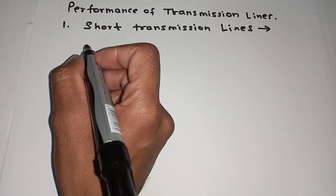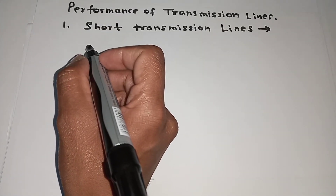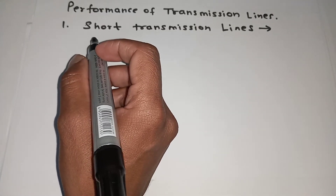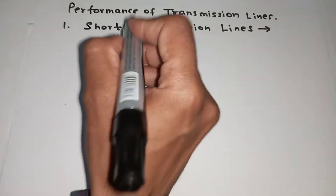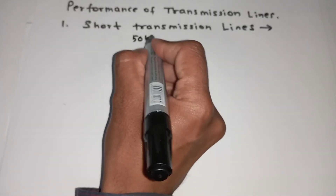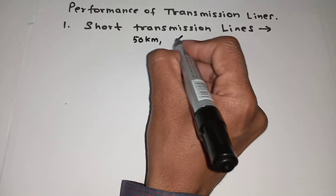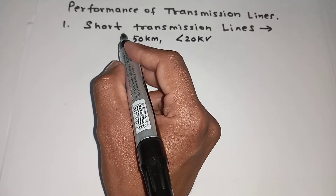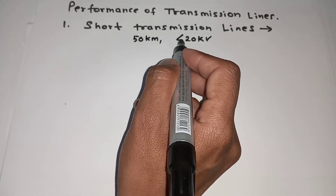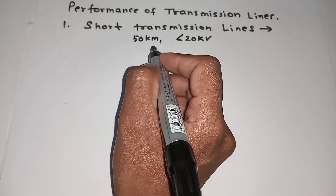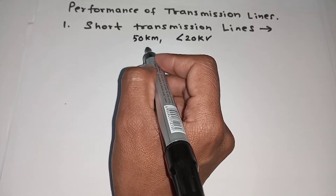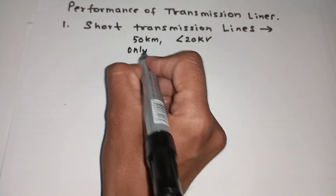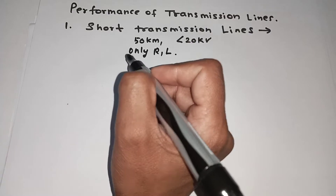Hello friends, today we'll discuss the performance of a transmission line. First, we will discuss the short transmission line. The range of a short transmission line is up to 50 kilometers and the voltage is less than 20 kilovolts. Because the length and voltage are smaller, there are no capacitance effects — only resistance and inductance are taken into account, so only R and L.